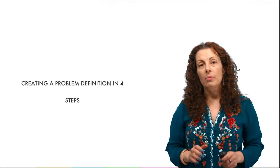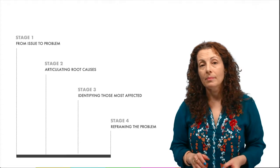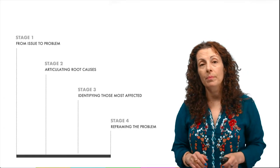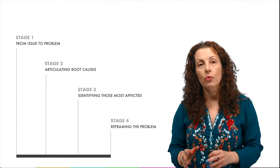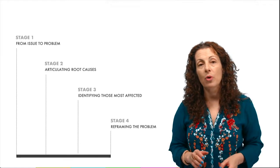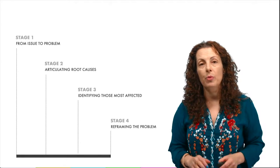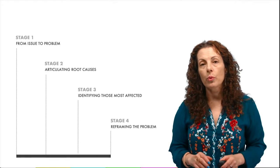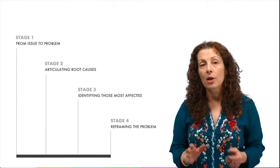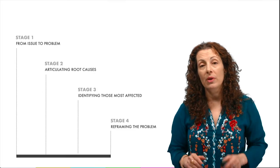To create a problem definition, we will start with a four-step process. First, we move from an issue to a problem. Second, we articulate the root causes. Third, we identify those most affected by the problem. And fourth and finally, we reframe the problem. In later modules, we will talk more about how to build an evidence base to support our definition of the problem. But let's briefly explore each of these steps.